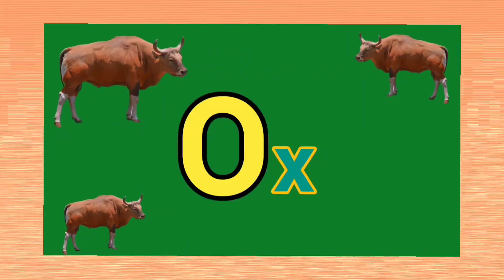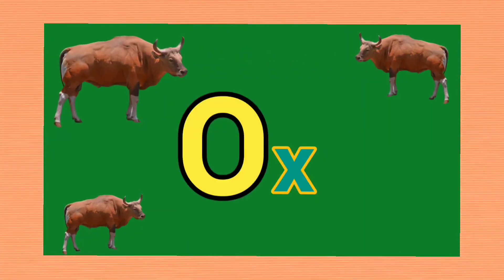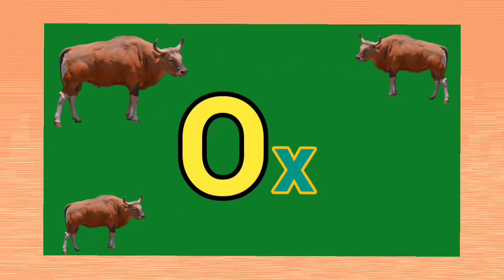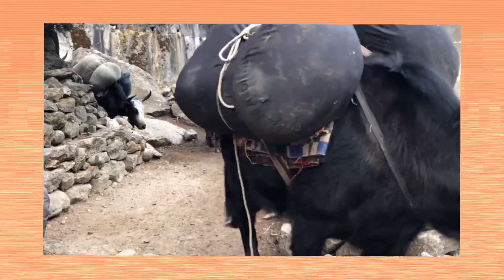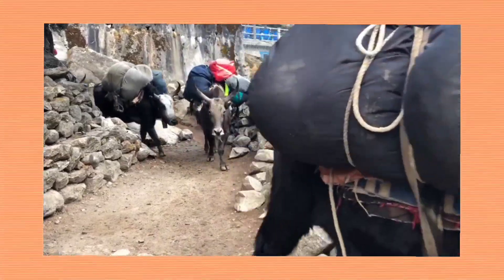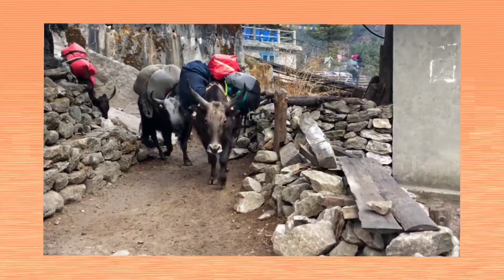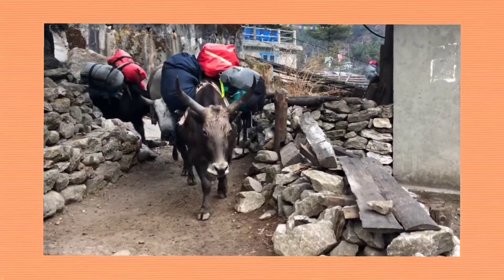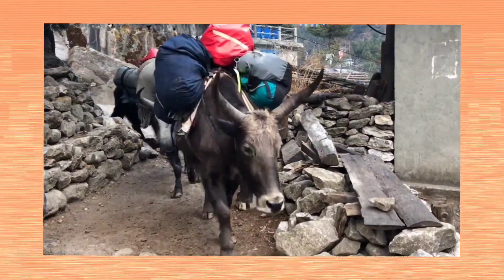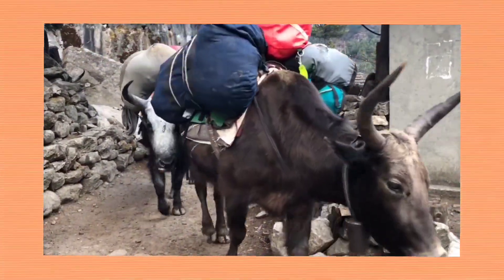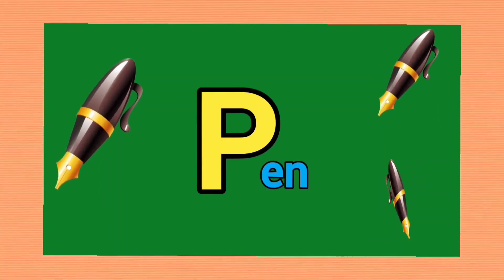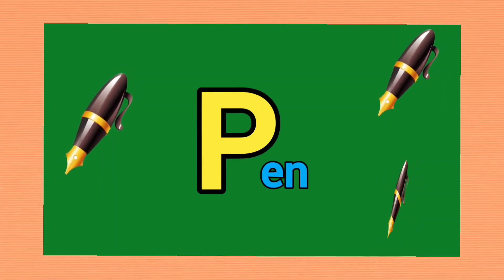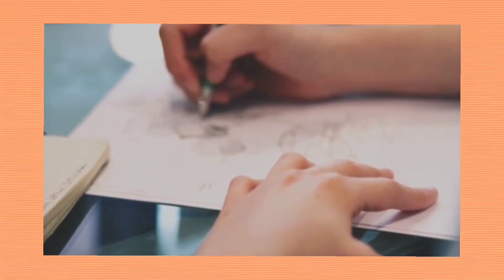O for ox. Ox means bail. P for pen. Pen means qalam.